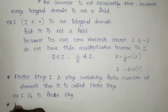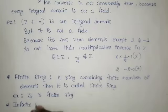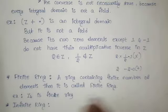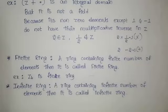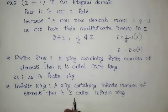Next definition is infinite ring. A ring containing an infinite number of elements is called an infinite ring.